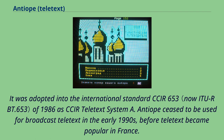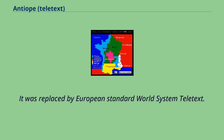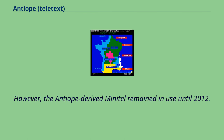It was adopted into the international standard CCIR 653 of 1986 as CCIR teletext system B. Antiope ceased to be used for broadcast teletext in the early 1990s, before teletext became popular in France. It was replaced by the European standard World System Teletext. However, the Antiope-derived Minitel remained in use until 2012.